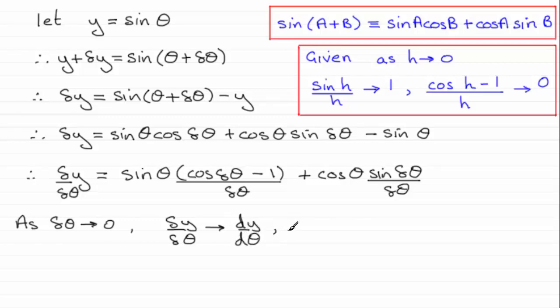And we can pick up on this result here which I'm taking as assumed knowledge. If we have h, a small angle, tending to 0 then sine h over h tends to 1 and the cosine of h minus 1 over h tends to 0. I haven't got h here though, I've got delta theta instead. So that would translate to this result that the cosine of delta theta minus 1 over delta theta tends to 0 and the sine of delta theta over delta theta tends to 1. So I can substitute these results into here and here.